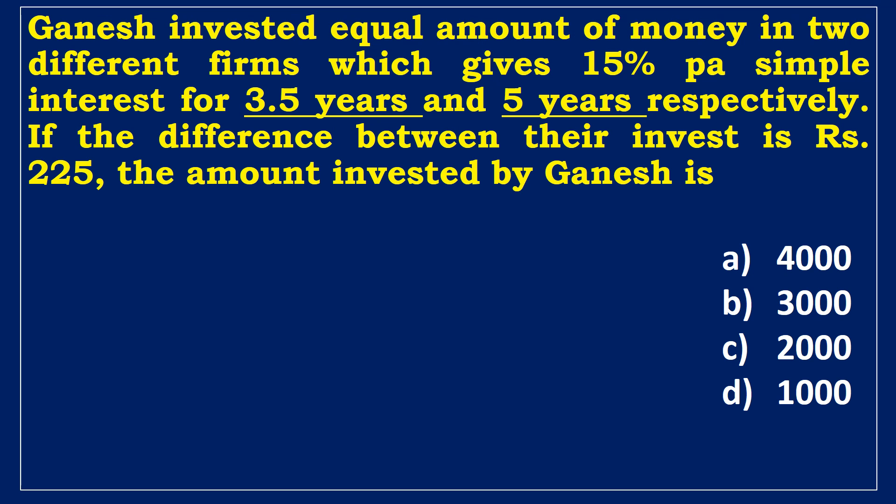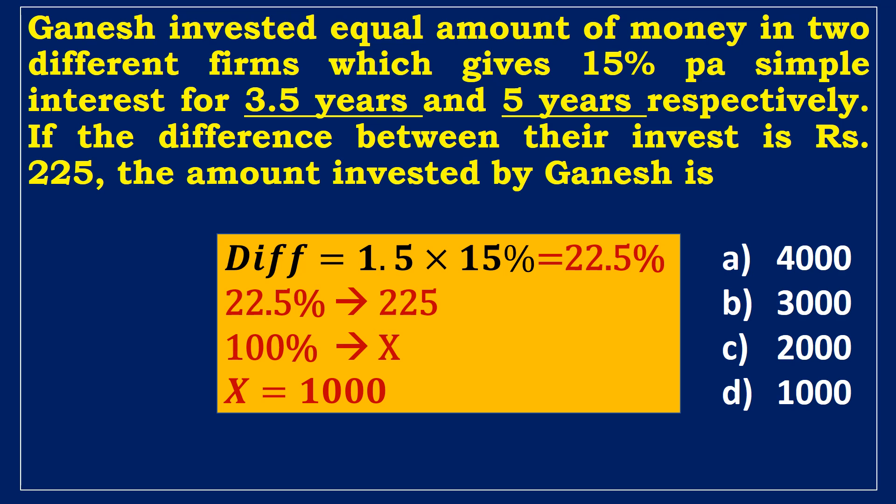Third example. Ganesh invested an equal amount of money in two firms offering 15% per annum simple interest for 3.5 years and 5 years respectively. If the difference between their interests is 225 rupees, find the amount invested. The difference in interest corresponds to the time difference of 1.5 years at 15% = 22.5%. Since 22.5% = 225 rupees, 1% = 10 rupees, so 100% = 1,000 rupees. Ganesh invested 1,000 rupees.